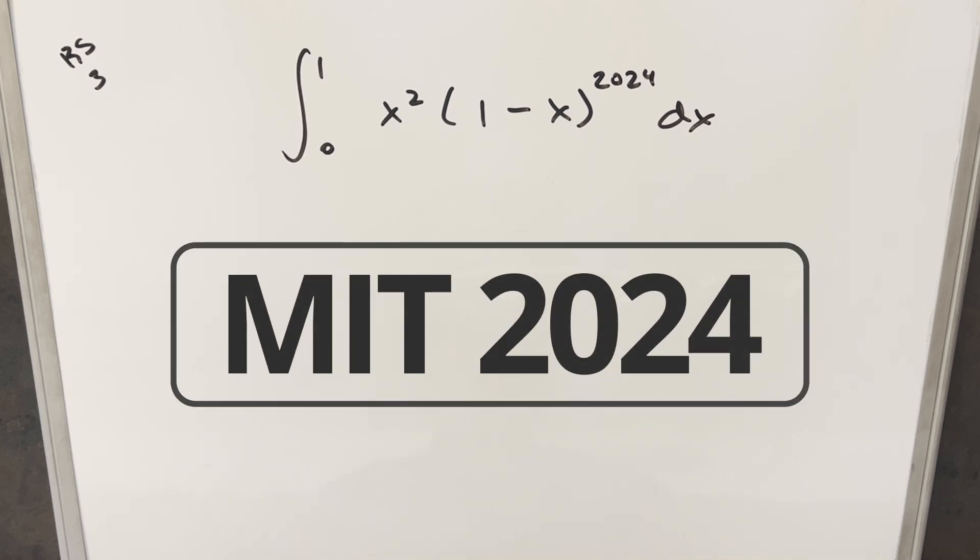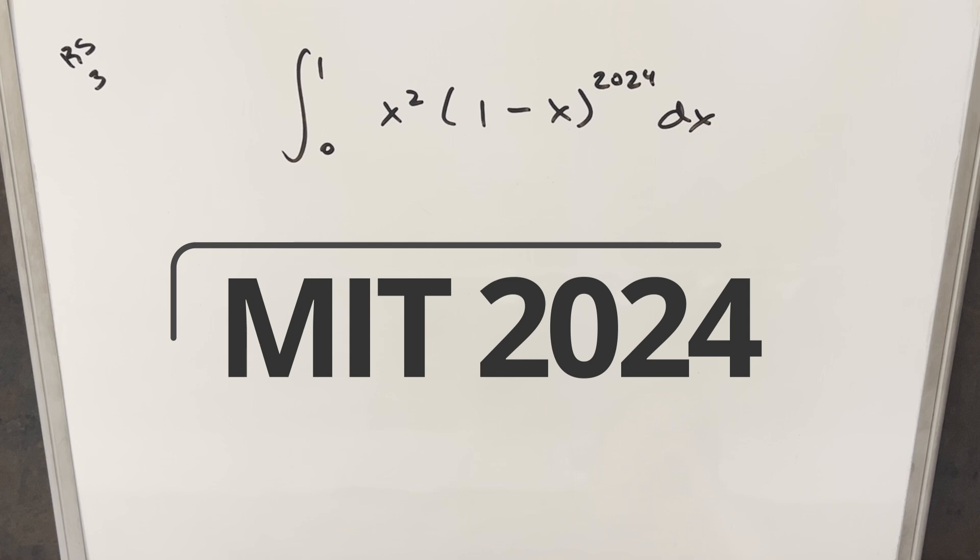Okay, we have here another interesting integral from MIT Integration Bee 2024. This was regular season number three. We had the integral from zero to one, x squared times one minus x to the 2024 dx.